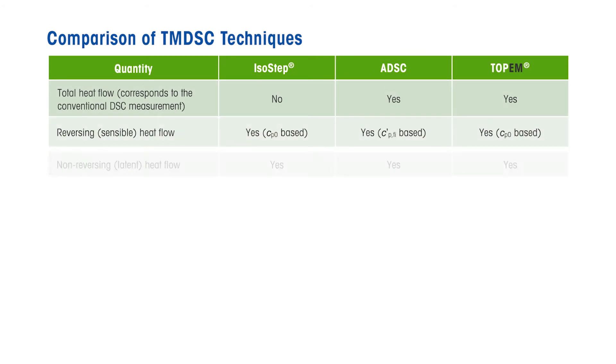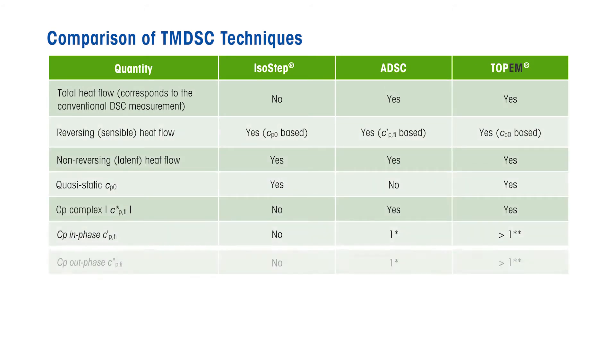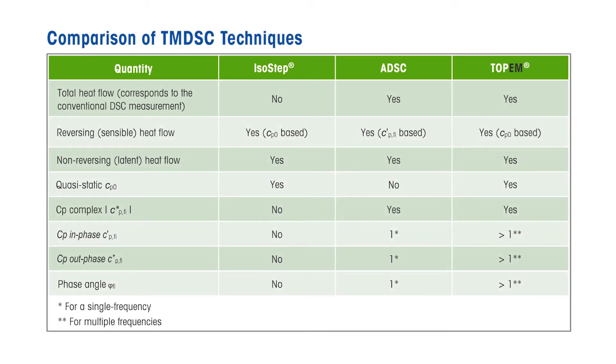Topham, which is the most advanced temperature-modulated technique, provides the following information: Total heat flow, reversing sensible heat flow, non-reversing latent heat flow, quasi-static specific heat capacity CP0, complex specific heat capacity and its in-phase and out-phase components, and a very sensitive phase angle curve for multiple frequencies.